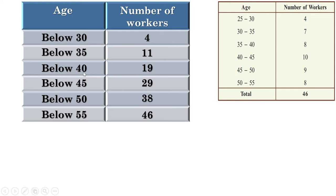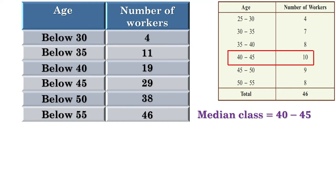But their ages are not below 40, because only the first 19 workers have their ages below 40. That means the ages of the 23rd and 24th workers are in between 40 and 45. Therefore, we can consider the median class as 40 to 45. The frequency of the median class is 10. The width of the median class is 45 minus 40, or 5. Now let us find the common difference: common difference is width divided by frequency, that is 5 divided by 10.